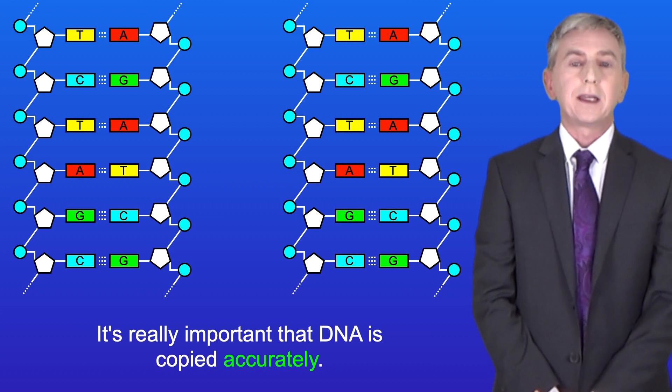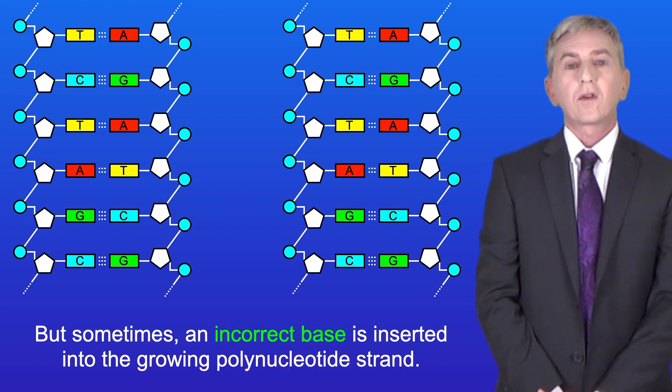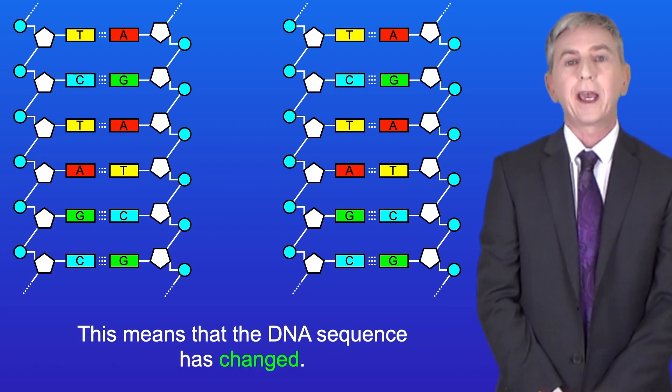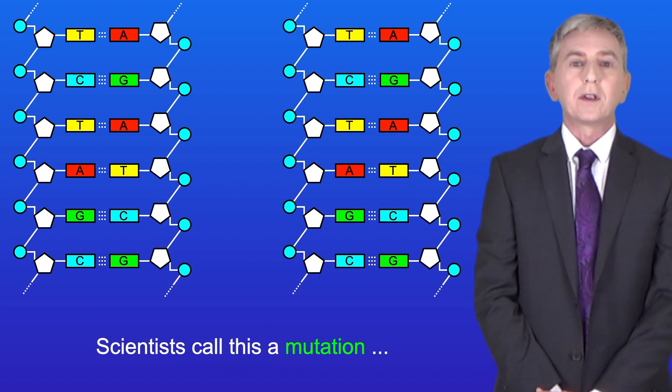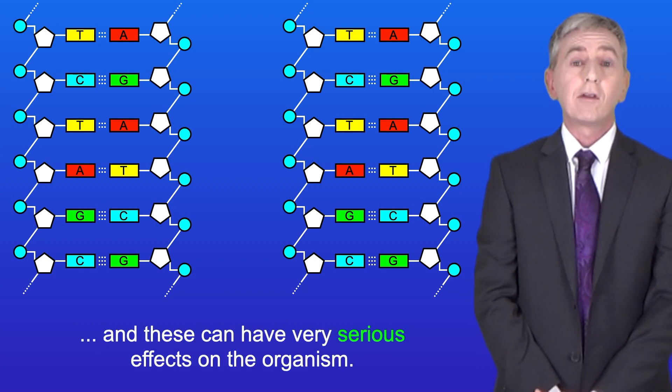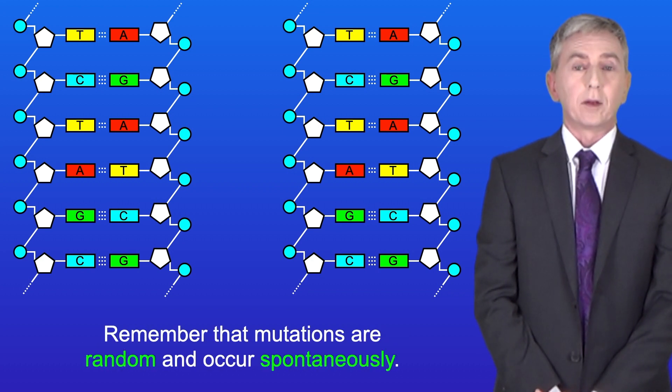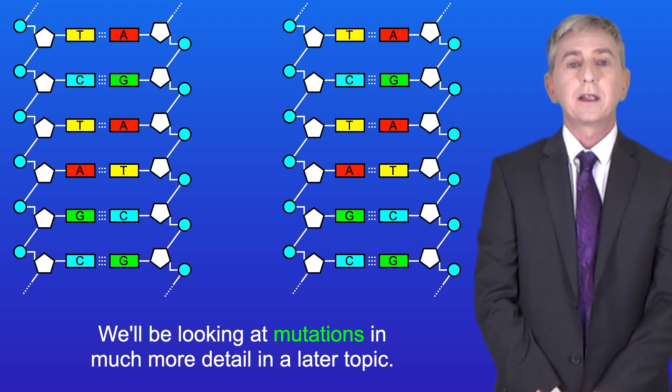Now it's really important that DNA is copied accurately, but sometimes an incorrect base is inserted into the growing polynucleotide strand. This means that the DNA sequence has changed. Scientists call this a mutation and these can have very serious effects on the organism. Remember that mutations are random and occur spontaneously. We'll be looking at mutations in much more detail in a later topic.